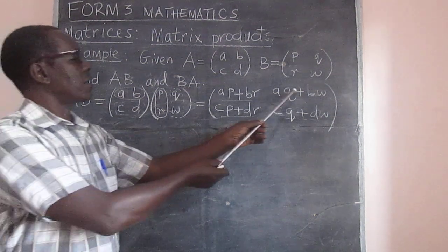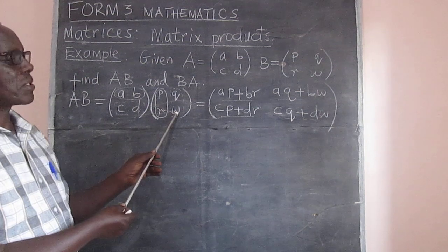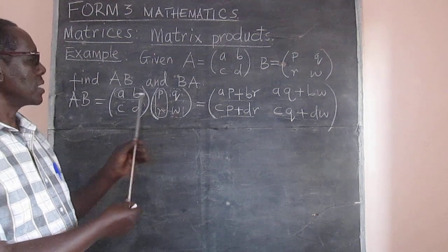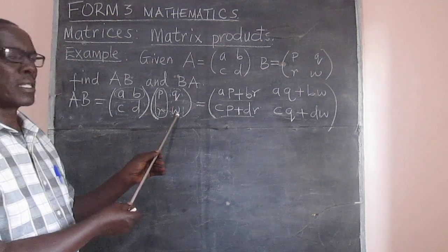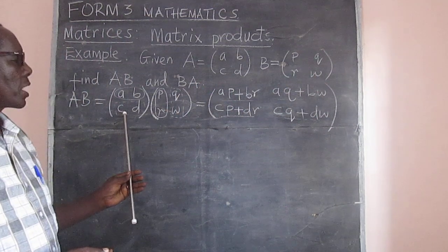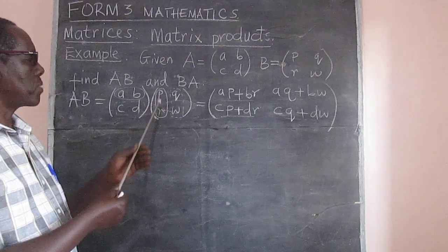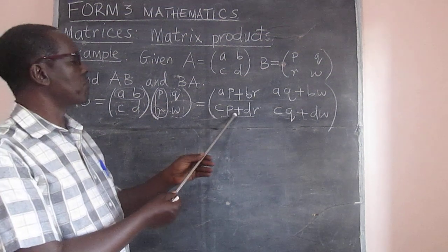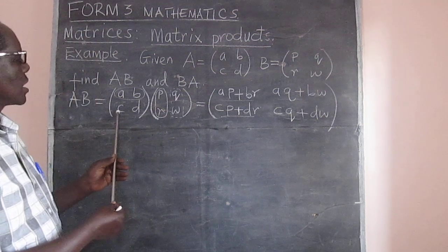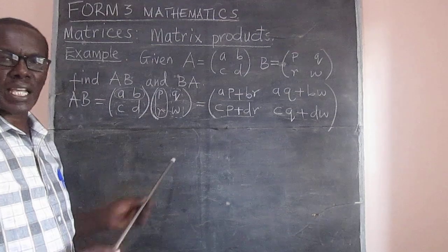Then for the other upper element, we get A times W. We are through with the upper part. Then we come down here and we take C, D multiplied by P and R. And that gives us CP plus DR. D multiplied by corresponding elements in the second column.